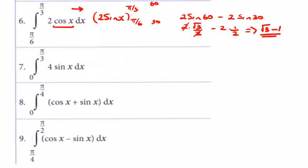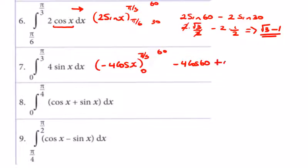Sine goes to minus cos, so we're going to get minus 4 cos x, evaluated between π/3 (60°) and 0. We get minus 4 times the cos of 60, minus minus 4 times the cos of 0, which is 1 — so that's plus 4. The cos of 60 is 1/2, so minus 4 times 1/2 is minus 2, plus 4 gives us plus 2.